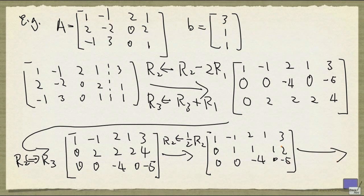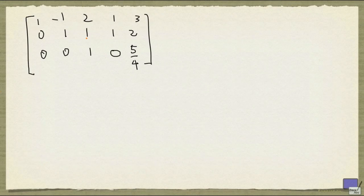Alright. Now, if I look at the leftmost nonzero entry in row 3, it's not 1. So I'm going to multiply row 3 by minus 1 over 4. Now, this matrix is in row echelon form.